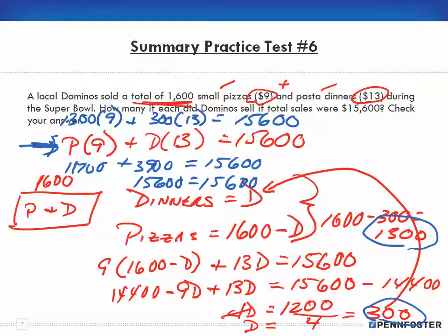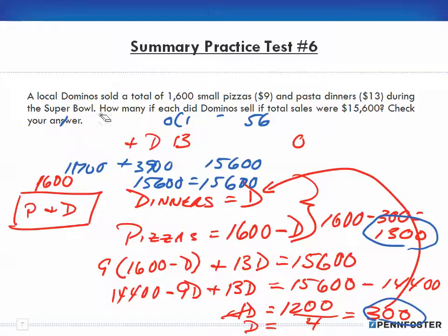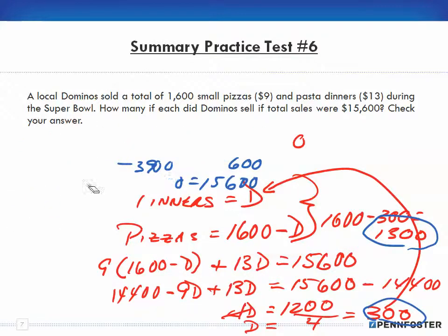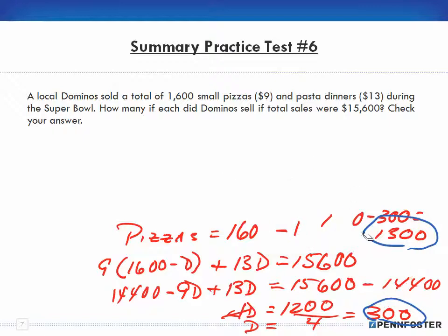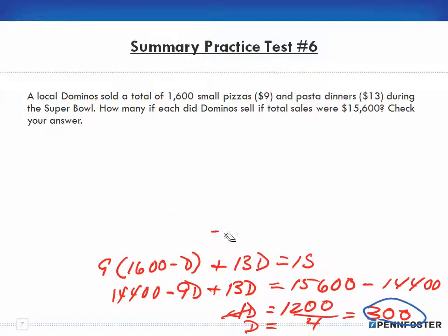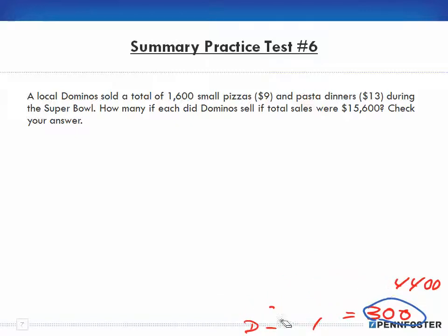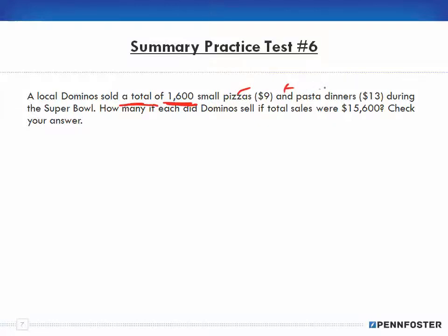Let me go back over this once more. I'm not going to redo the math — pause and write it down if you need to — but let me talk through it. If you understood it already, go ahead and stop the video. Otherwise, let's go through it again: it says Domino's sold a total of 1600 small pizzas and pasta dinners, so pizzas plus dinners equals 1600.